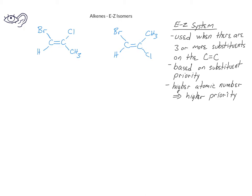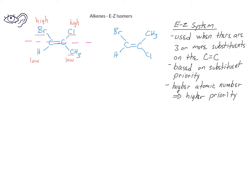We then do the same analysis for the second sp2 hybrid carbon, where we compare the two atoms directly attached to the carbon — the first atom with a higher atomic number than the other atom becomes the higher priority. We then look at the two highest priority groups on the two sp2 hybrid carbons. If the two high priority groups are on the same side of the double bond, we indicate this with the letter Z.